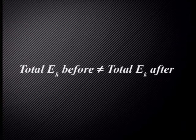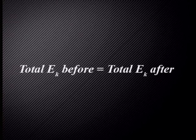Now let's look at the two types of collisions that can occur. An inelastic collision is a collision in which kinetic energy is not conserved. So the total kinetic energy before the collision is not equal to the total kinetic energy after the collision. An elastic collision is a collision in which kinetic energy is conserved. So the total kinetic energy before the collision is equal to the total kinetic energy after the collision.